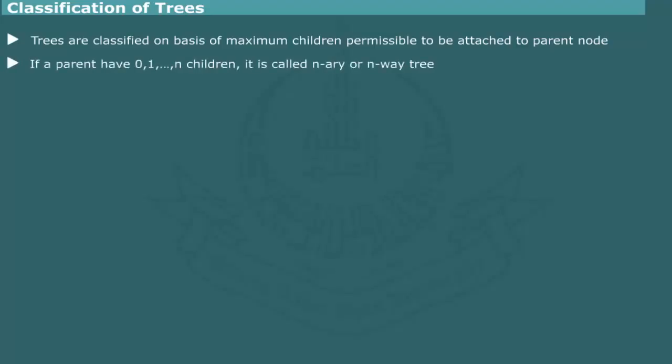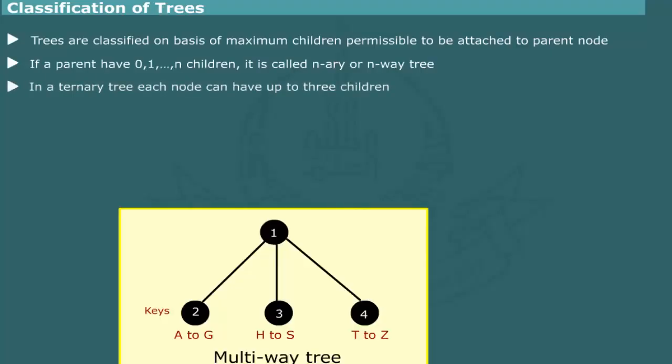Classification of trees. The tree structures are classified on the basis of maximum number of children permissible to be attached to a parent node. If in a tree, a parent has 0, 1, 2, n children, it is called n-ary or n-way tree. A ternary tree, for example, is the one in which each node can have up to three children. If an n-ary tree contains nodes in specific order, the tree is called multiway tree.